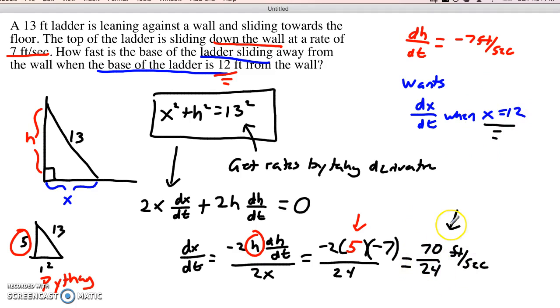Notice, by the way, 70 over 24, that's a good bit less than 7 feet per second. I mean, 70 over 24 is a little bit less than 3. So just under 3, which is quite a bit slower than the top of the ladder is moving. So we were talking about that before and also noticing that at the other side, that as x gets small, as the height is really close to 13, we get a very, very fast rate.